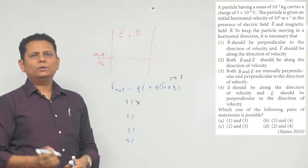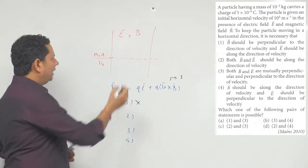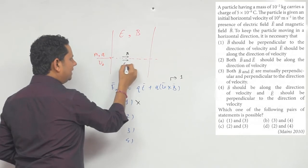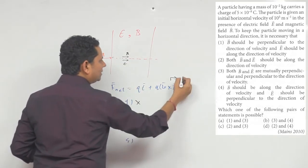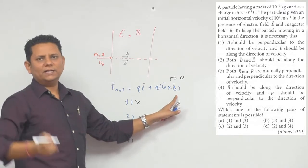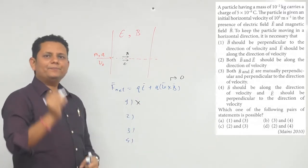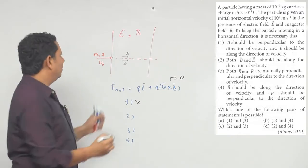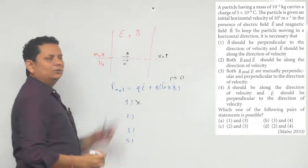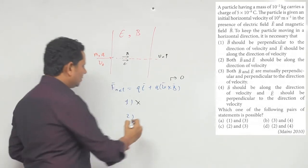दूसरा case कहता है: both B and E should be along the direction of velocity। अगर B इस direction में है और v भी इस direction में है, तो v × B में angle 0 हो जाएगा और sin θ = 0, यानी magnetic force = 0। Net force सिर्फ qE रहेगा — particle का accelerated horizontal motion होगा, velocity v₀ से greater होगी। Motion horizontal रहेगा, तो Option 2 possible है।